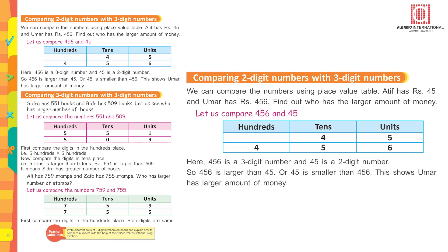Comparing two-digit numbers with three-digit numbers. We can compare numbers using a place value table. Atif has 45 rupees and Umar has 456 rupees. Find out who has the largest amount of money. Let us compare the two numbers 456 and 45.